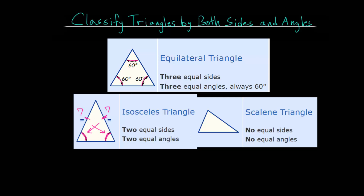With isosceles triangles, it can be a little bit tricky based on the definition. Older definitions would say that an isosceles triangle has exactly two equal sides — for example, Euclid's Elements defines isosceles triangles as having exactly two equal sides. But more modern definitions define these triangles as having at least two equal sides. By that definition, an equilateral triangle would also be an isosceles triangle. So with the modern definition, equilateral triangles are also isosceles — you always want to be careful with your definitions.